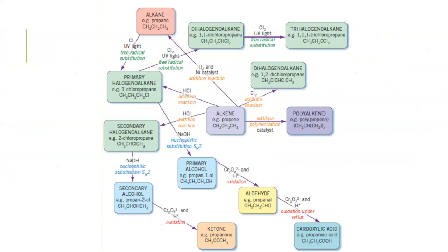This is hopefully similar to the one that we have created in class — a map showing all the different reaction pathways for the different reactions that we need to know: our substitution reactions through to our addition reactions of alkenes and the oxidations of our alcohols, with each of the reagents and the type of reaction listed. Remembering that for VCE we don't need to know that it's a nucleophilic substitution or the SN2 mechanism — all we need to know is that this is a substitution reaction. Same with substitution reactions of alkanes: we don't need to know it's a free radical substitution; VCAA just expects us to say that it is a substitution reaction.